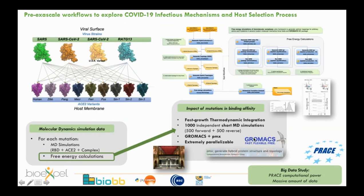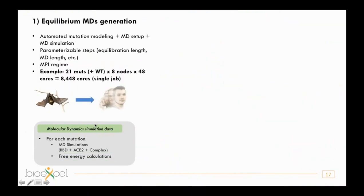Returning to our two workflows: the first automates modeling of all mutations, setup, and production MD simulation runs. As an example, in a single job using more than 8,000 cores of the supercomputer, we can run 22 mutations (21 plus wild type) in just a few hours.